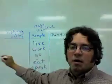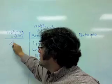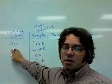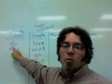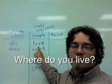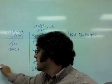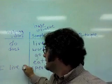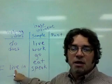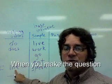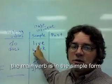For example, if you want to make a question in the present tense, you can use the helping verb 'do' or 'does.' Where do you live? When you answer, your answer is in the present tense: I live in and then the name of the place. But when you make the question, you're using the verb 'do' and the verb is in the simple form.